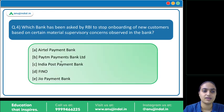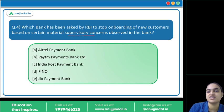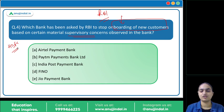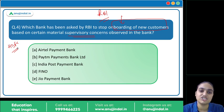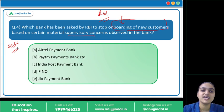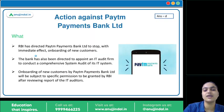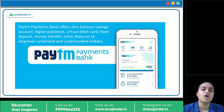The last question asks: which bank has been asked by RBI to stop onboarding new customers based on material supervisory concerns? Recently, RBI notified that one payment bank cannot onboard new customers. If you recall, last year HDFC Bank also had restrictions on onboarding new credit card customers due to technology-related issues on its digital platforms and had to work extensively on improving its systems. Similarly, RBI has now imposed a restriction on a payment bank due to supervisory concerns — it's Paytm Payments Bank, option B.